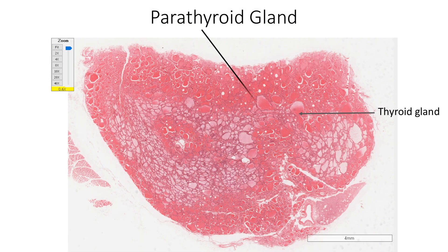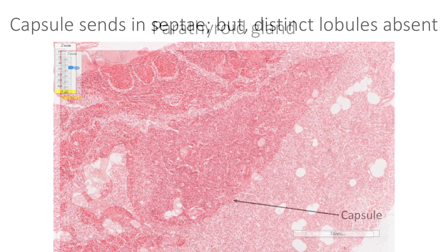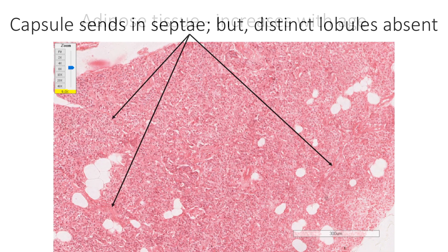In this section, we can see the section of parathyroid gland adjacent to thyroid gland. Parathyroid gland is covered by a delicate capsule. Although this capsule sends in septae, distinct well-defined lobules are not seen in the parathyroid gland parenchyma.